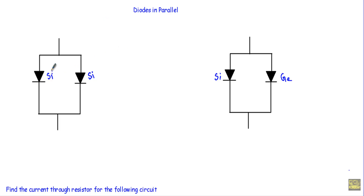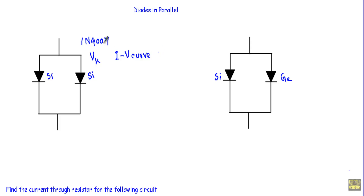Let's say I have two silicon diodes connected in parallel, say from the 1N4007 family. As they are from the same family, their built-in potential VK will be nearly the same, and their IV characteristics curve will be nearly the same. Therefore, if I apply a positive voltage at one terminal and negative at the other, both diodes will draw current from the source.